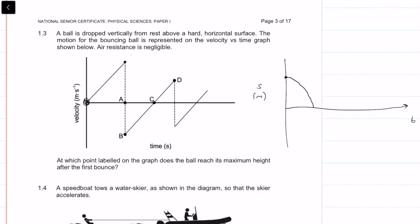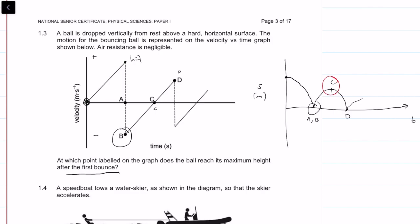Point A is where the ball hits the floor. It then moves in the opposite direction — that's why there's a shift from positive to negative velocity — moving upwards to point B, then all the way to point C where velocity equals zero, a turning point. At D it goes downwards again. The question asks where the ball reaches maximum height after the first bounce — that is point C. Question 1.3 answer is C.